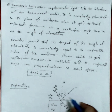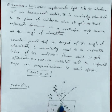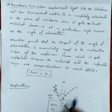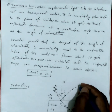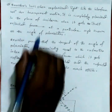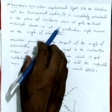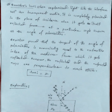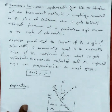We have a transparent medium with air medium and glass medium. This medium has a refractive index, and this is the interface. When unpolarized light is incident, the reflected light at this angle is fully polarized — completely polarized in the plane of incidence. This particular angle of incidence is called the polarizing angle.